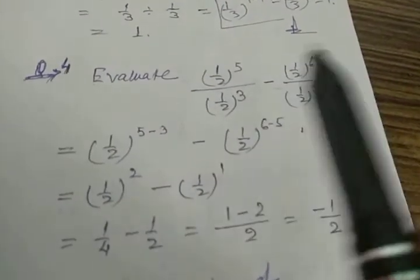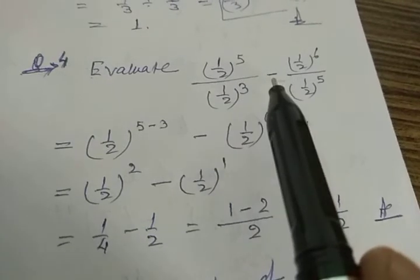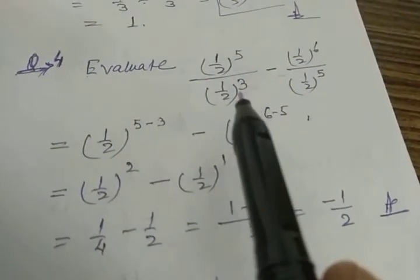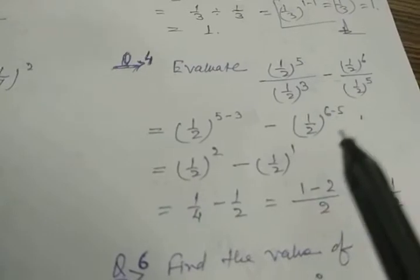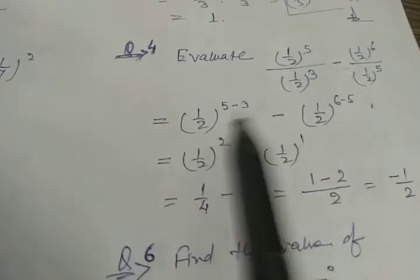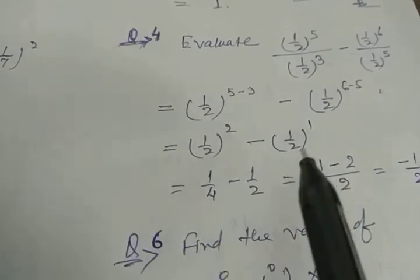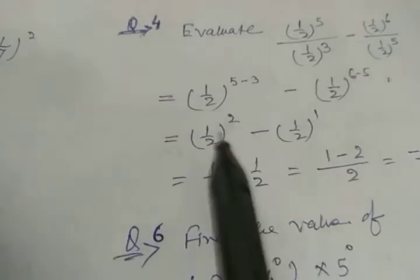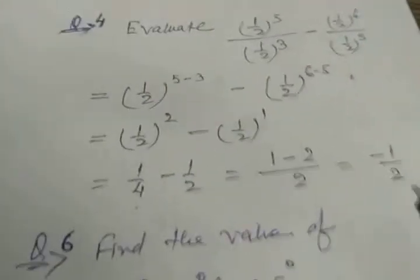Next problem: base is 1/2 everywhere — (1/2)⁵ ÷ (1/2)³ minus (1/2)⁶ ÷ (1/2)⁵. Since base is same and there is division, powers are subtracted: 5 minus 3 gives (1/2)², and 6 minus 5 gives (1/2)¹. Now base is same but there is a minus sign, so we cannot use any exponent law — we simplify separately. (1/2)² is 1/4 and (1/2)¹ is 1/2. Taking the LCM and simplifying, the result is minus 1/2.